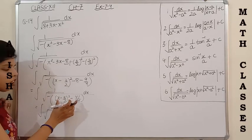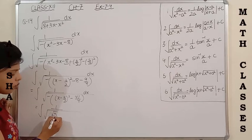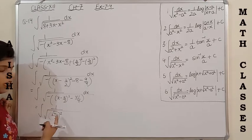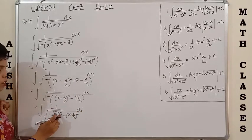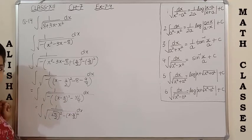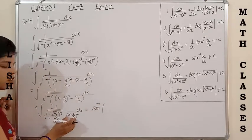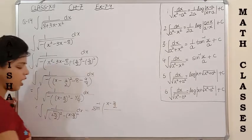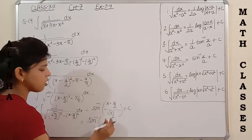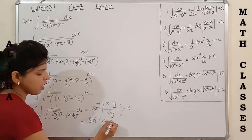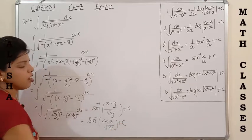Taking the minus sign inside, the expression becomes √((41/4) - (x - 3/2)²) = √((√41/2)² - (x - 3/2)²). This matches formula 4: sin⁻¹(x/a) + C. Applying it with x replaced by (x - 3/2) and a = √41/2: sin⁻¹((x - 3/2)/(√41/2)) + C. Simplifying — taking LCM 2 — gives sin⁻¹((2x - 3)/√41) + C. This is the final answer.